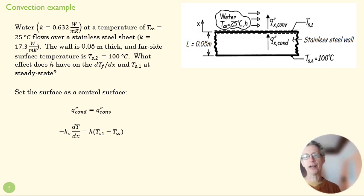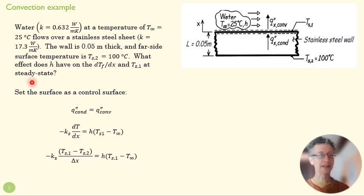Then we're going to substitute in our rate equation. Pretty straightforward so far: Fourier's law on the left, our convection rate equation on the right. The next step is to recognize that at steady state, we're going to have a linear temperature field in our steel.